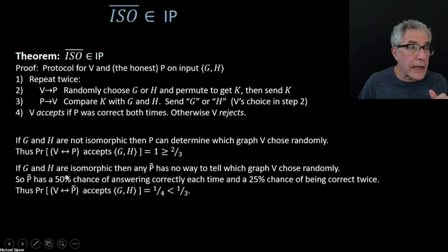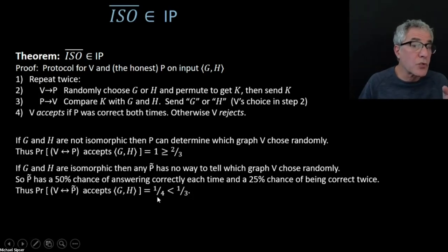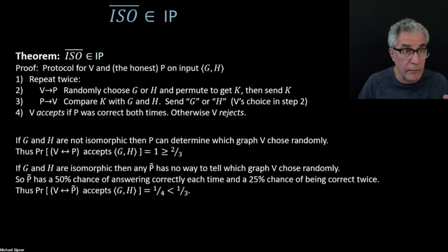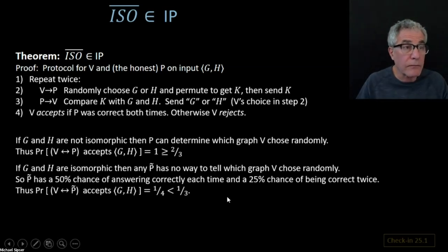For the isomorphic case, the verifier interacting with any prover is going to accept the input with at most one quarter — 25% of the time — which is less than a third. So that achieves the bound.